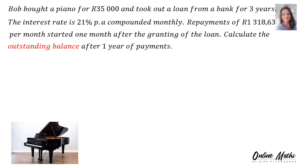Bob bought a piano for R35,000 and took out a loan from the bank for three years. The interest rate is 21% per annum compounded monthly. Repayments of R1,318.63 per month started one month after the granting of the loan. Calculate the outstanding balance after one year of payments.